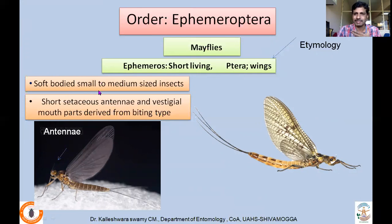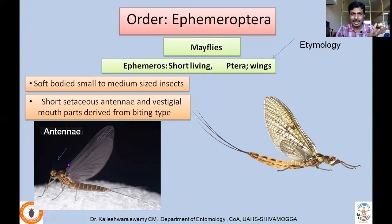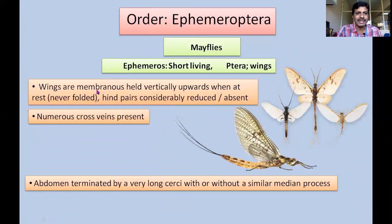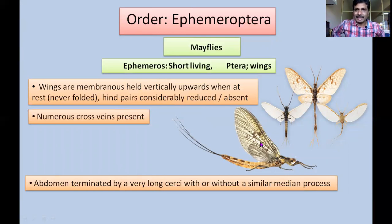They have very short setaceous antennae and mouthparts are vestigial. In fact, they do not feed during the adult stage. They feed a lot as naiads, and that is sufficient for the short survival period of the adult. Basically they have biting and chewing type of mouthparts, but it is usually vestigial and non-functional. Wings are membranous and held vertically upwards when at rest — they are placed above the abdomen like this, vertically, and they are never folded.